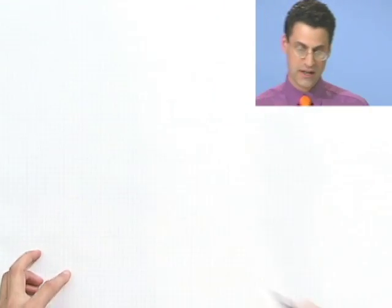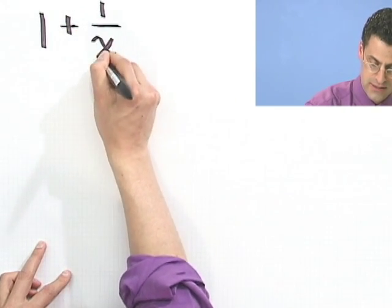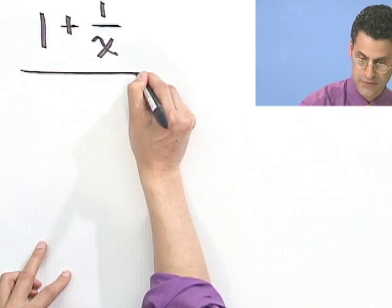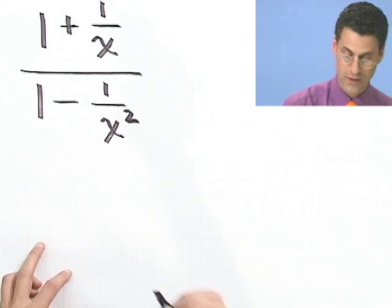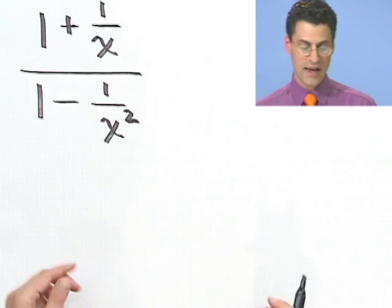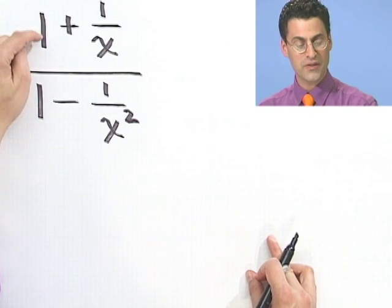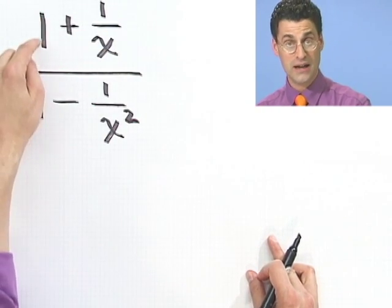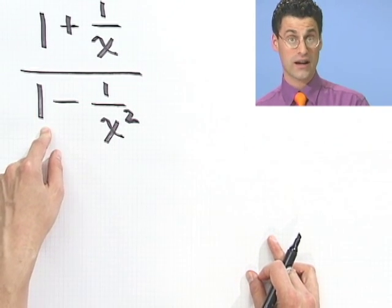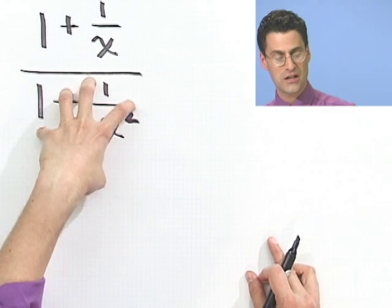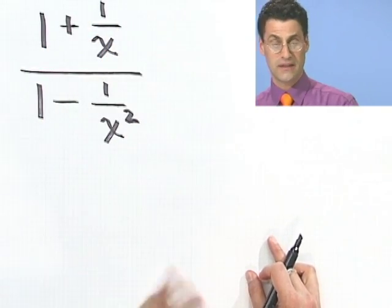Let's take a look at another example just to illustrate the point. Suppose we have 1 plus 1 over x, divided by 1 minus 1 over x squared. Again, two methods to do this. I could get a common denominator here, multiplying the 1 top and bottom by x over x, multiplying this 1 top and bottom by x squared over x squared, getting one big fraction here and one big fraction here, and multiply. That will work.